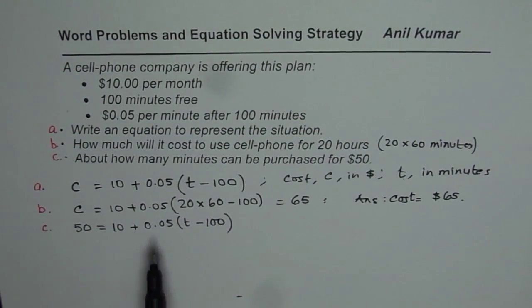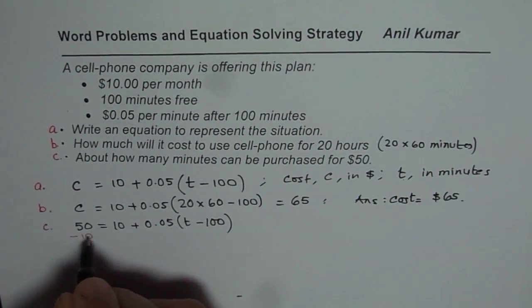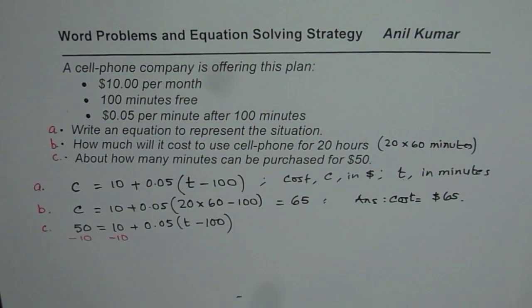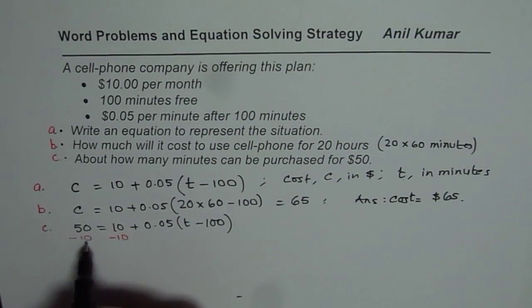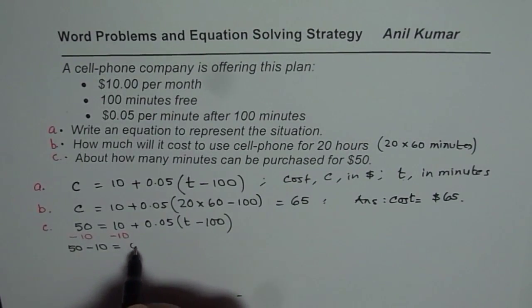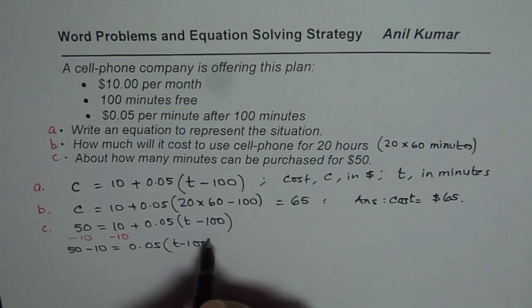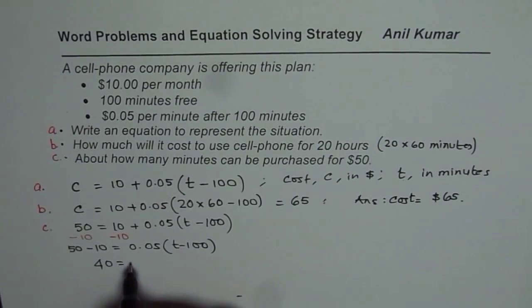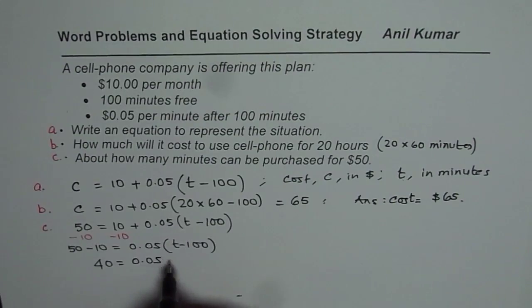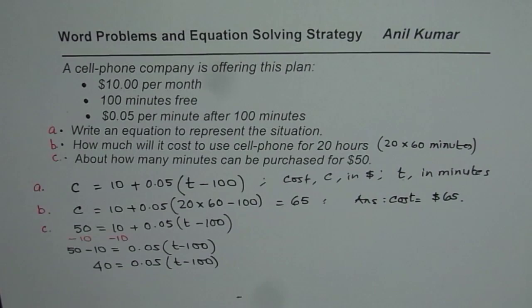So 50 equals to 10 plus 0.05 times T minus 100. So first step is we will take away 10 from each side. So first step will be take away 10 from each side. So if you do that, what do you get? 50 minus 10 is 40. So we can write this as 50 minus 10 equals to 0.05 times T minus 100. So that is 40 equals to 0.05 times T minus 100.